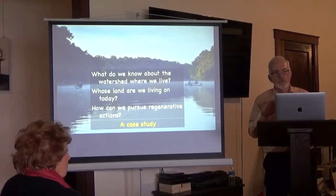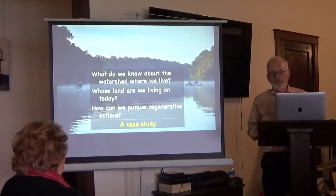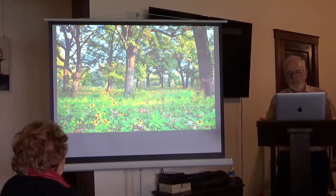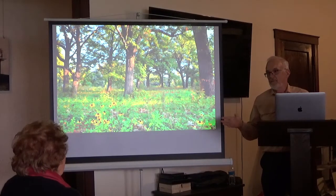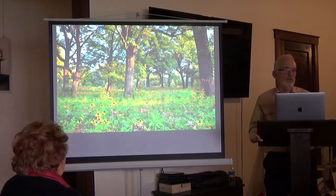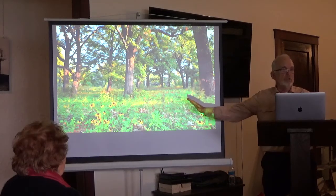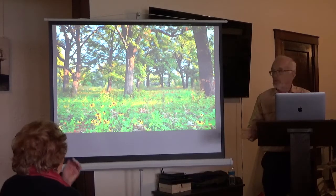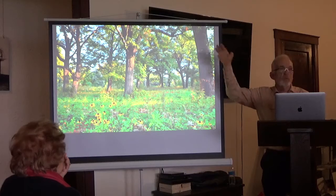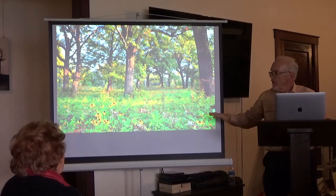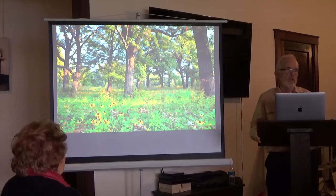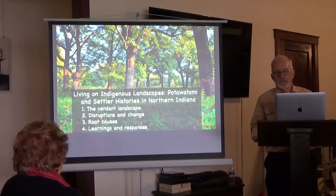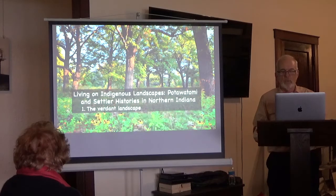You'll learn from my learning, and I look forward to questions and answers at the end. Way back before the white settlers came into northern Indiana, where we lived looked like this — what's called an oak savannah. You have the larger trees, and because there's so much leaf canopy on top, you end up with just grasses and flowers underneath — a beautiful system. Today we're going to talk about four different things, giving a highlight to each area, starting with the verdant landscape.